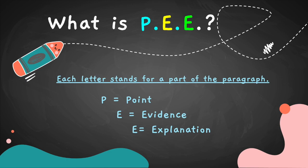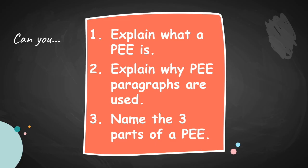Each letter of the PEE stands for part of the paragraph that we're going to write. The P stands for point, the first E stands for evidence, and the second E stands for explanation. That gives us a basic understanding of what a PEE paragraph is.